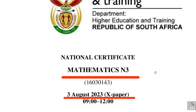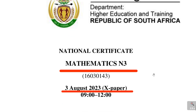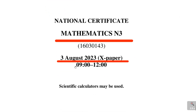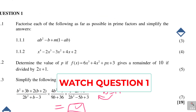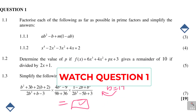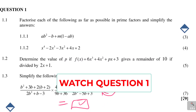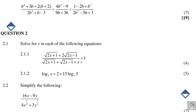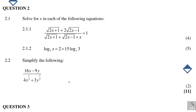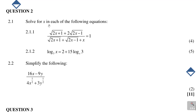Hello once again, I'm a most available student, my name is Confident. We are continuing with Mathematics N3, this is the August 2023 paper. We have looked at question number one in the previous video, so I encourage you to grab hold of it — it was 19 marks. Now let's focus on question number two, which was 11 marks.